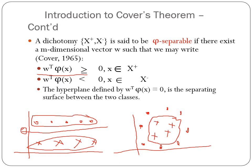A dichotomy x+, x-, which has got only two output classes, a positive class and a negative class, is said to be φ separable if there exists an m dimensional vector w such that w transpose into φ(x) is greater than or equal to 0 for x belonging to x+, and w transpose φ(x) is less than 0 for x belonging to x-. The hyperplane designed at w transpose φ(x) equals 0 is the separating surface between the two classes.